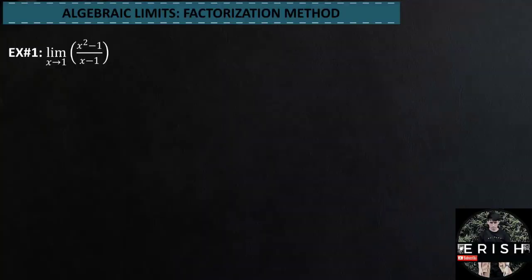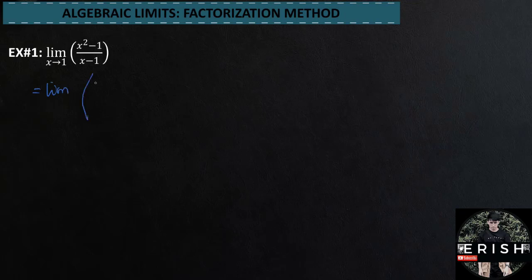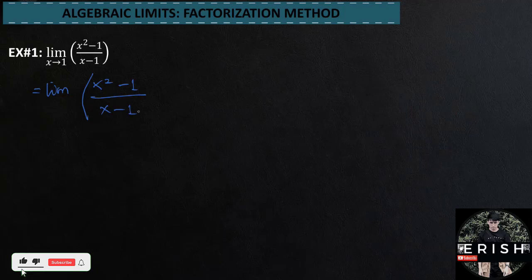First example for algebraic limits using the factorization method. We are going to solve the limit of x squared minus 1 over x minus 1 as x approaches 1. So let's rewrite the problem first: limit of x squared minus 1 over x minus 1 as x approaches 1.